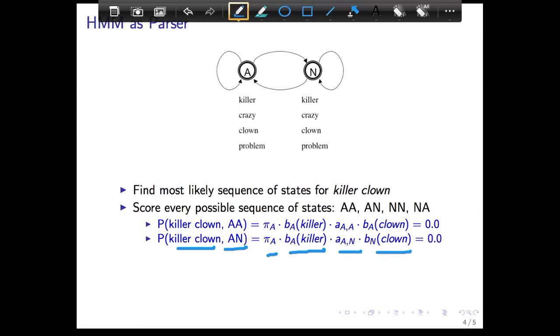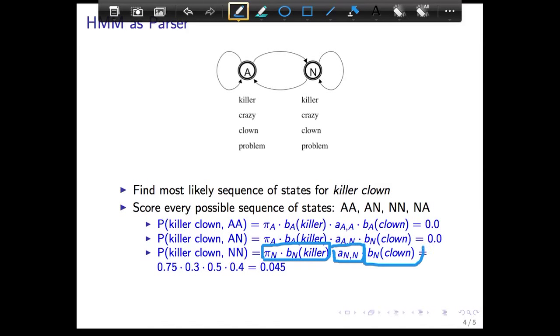Now, the reason why this and the previous one ends up being zero is, in this case, killer cannot be an adjective, gets probability zero. And in the previous case, also killer as an adjective gets probability zero. So both of these get scored as zero. If you look at this one, this says you could start as a noun and generate killer as a noun. And then you take a transition to a noun state, and then generate clown as a noun.